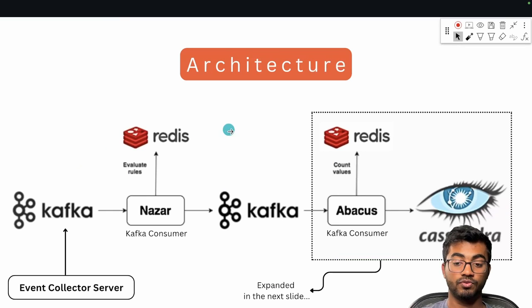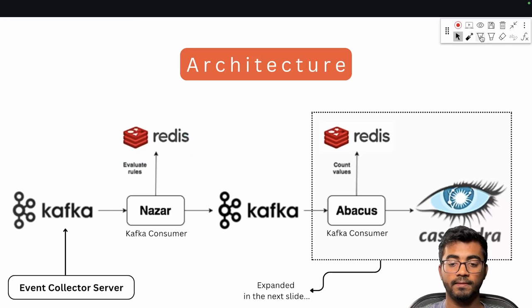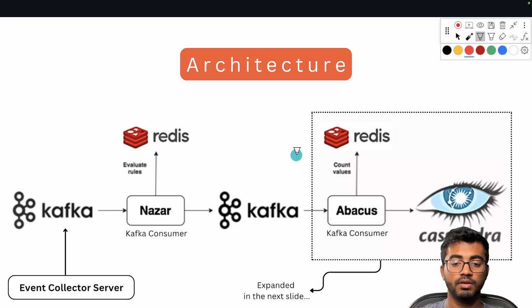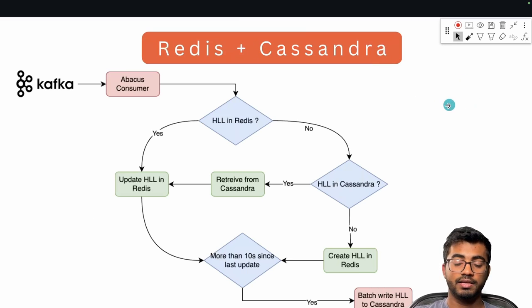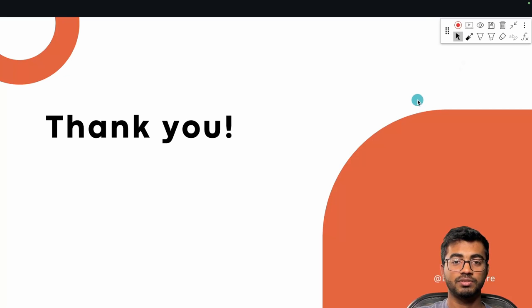Coming back to the full diagram: the Nazar consumer made the first filter and acted as a store for historic operation context. Events were then inputted into Kafka, and the Abacus part was responsible for the counting logic. That's all for today — I hope you liked this video. I'll attach all reference documents and research articles in the description. Feel free to read them and ask questions in the comment section. Have a nice day and see you in the next one.